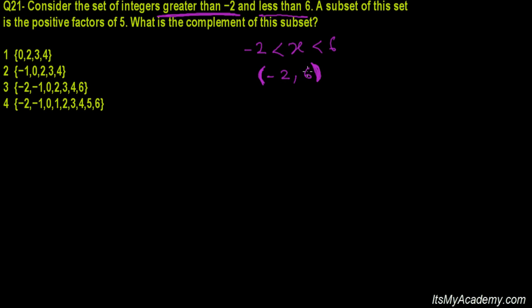So in the number line, let's make a number line here. And in this number line, let's say this is -2, -1, 0, 1, 2, 3, 4, 5, and then 6.